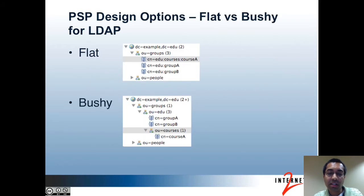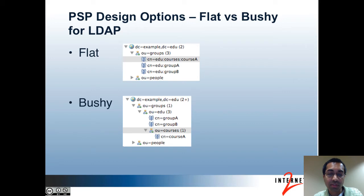One of the design decisions to make is whether group objects in LDAP should be represented as flat or bushy. These two screenshots show examples of how the objects would be structured in LDAP for both cases. In both examples, the same objects exist in Grouper. Grouper has a folder called EDU, under that there's a folder called Courses. Under the EDU folder there are two groups, Group A and Group B, and under the EDU colon Courses folder there's a group called Courses A.